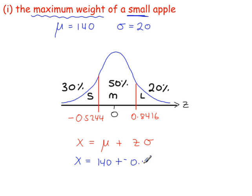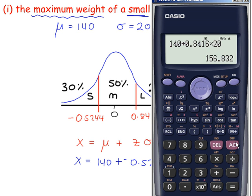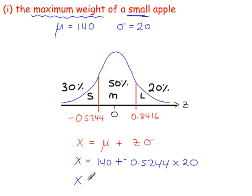Minus 0.5244 times the standard deviation, which is 20. Okay, that all goes into your calculator. 140 plus minus 0.5244 times 20. And that gives 129.5. So that's 129.5 grams.